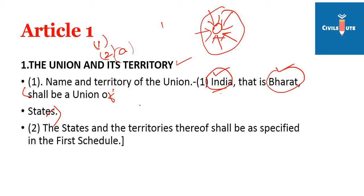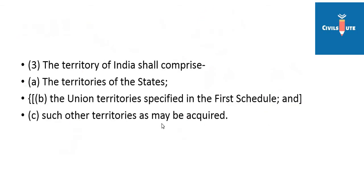In the first clause, the states and territories shall be specified in the first schedule. There are 12 schedules in the Constitution. In the first schedule, the territory of India includes the territory of states.